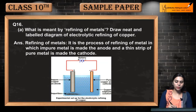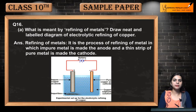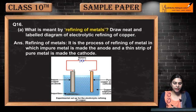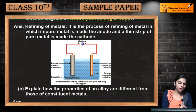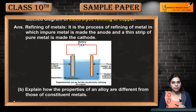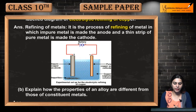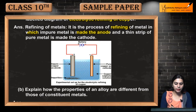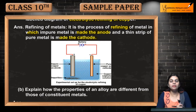Our next question is question number 16: what is meant by refining of metals? Draw a neat and labelled diagram of electrolytic refining of copper. Refining of metals is the process in which impure metal is made the anode and a thin strip of pure metal is made the cathode.